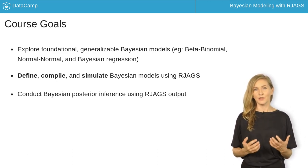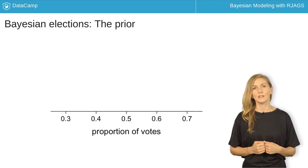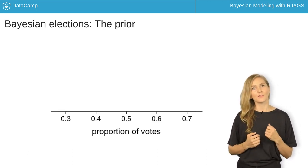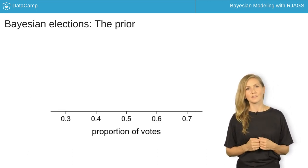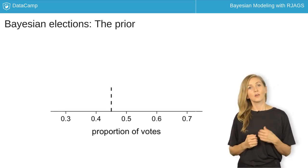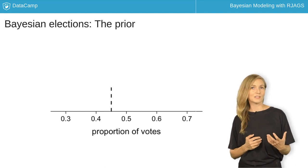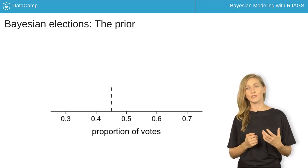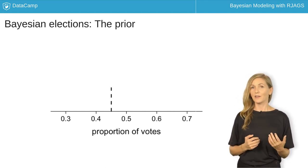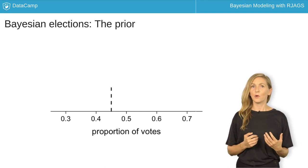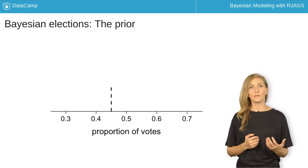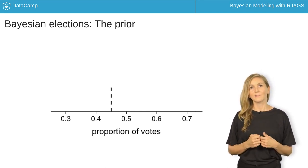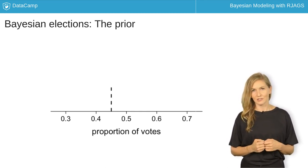Let's start with a review. Suppose you're running in an election for public office. Older polls suggest that you have the support of 45% of the voters. However, due to polling errors and fluctuations in support, this figure is uncertain.